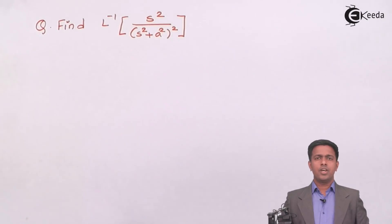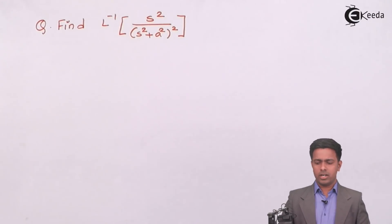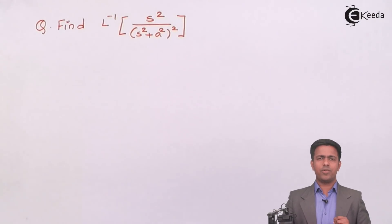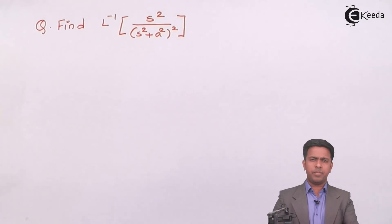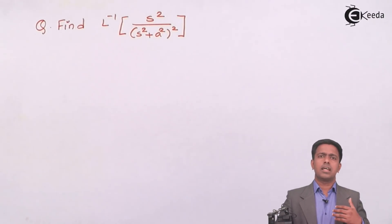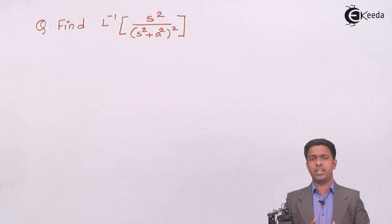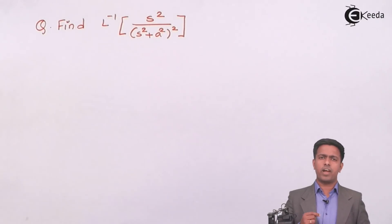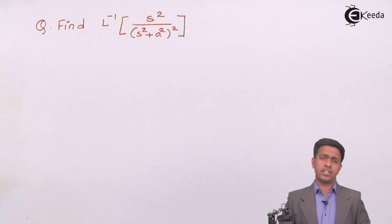Here we have to find out the inverse Laplace transform of s squared upon (s squared plus a squared) the whole square. To find out the inverse Laplace transform of this function, we have to use the convolution theorem. The inverse Laplace transform of this method can be found out by other methods as well, but here since we are taking this numerical for convolution theorem, I am going to find out the answer using convolution theorem only.